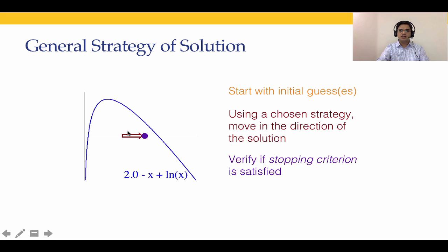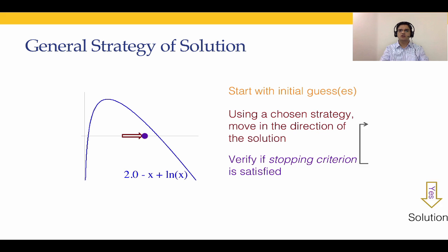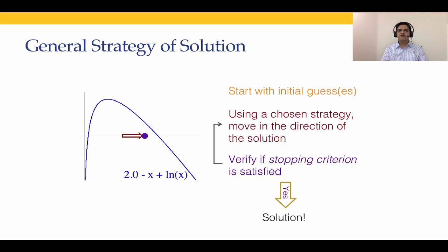The stopping criterion is either whether the change in x is sufficiently small — that is, the brown arrow is short enough — or whether f(x) is sufficiently close to zero — the vertical distance is small enough. If the criterion is not met, we repeat the two steps: move toward the solution and check again. We keep repeating until the stopping criterion is satisfied.